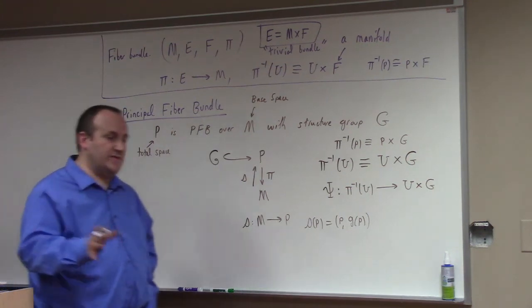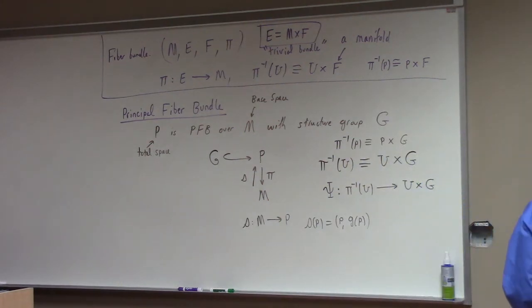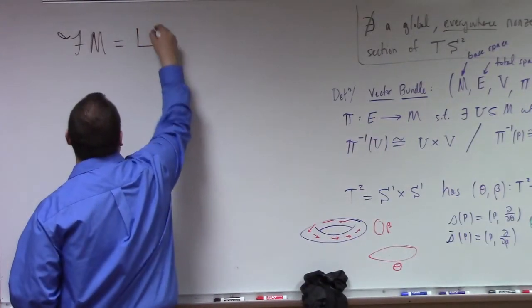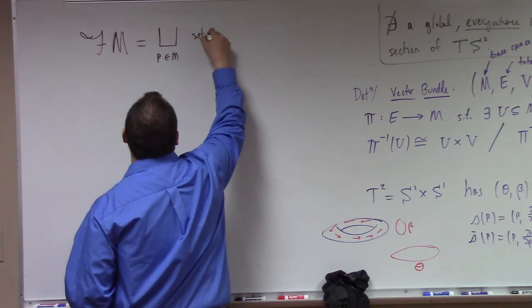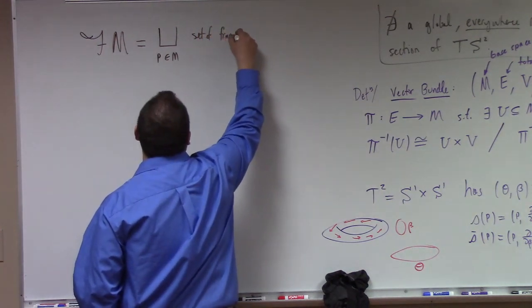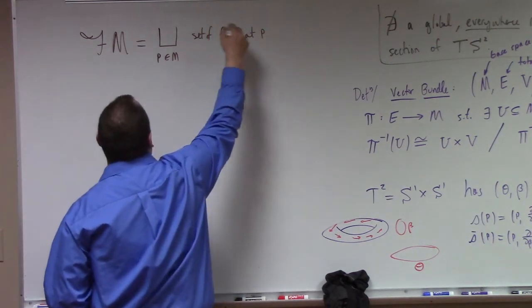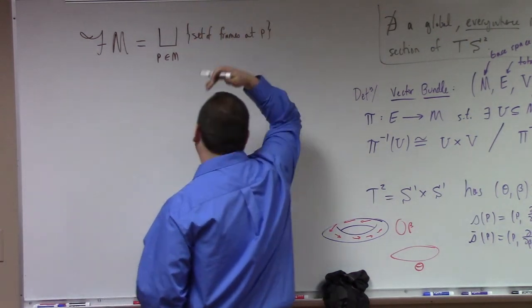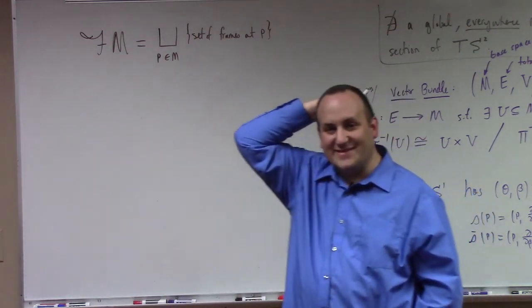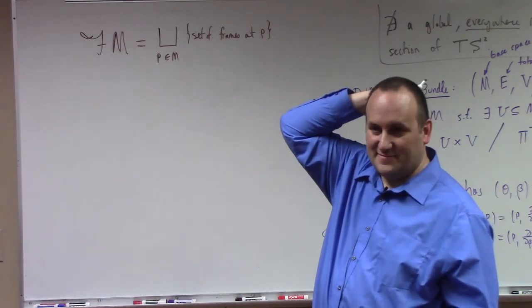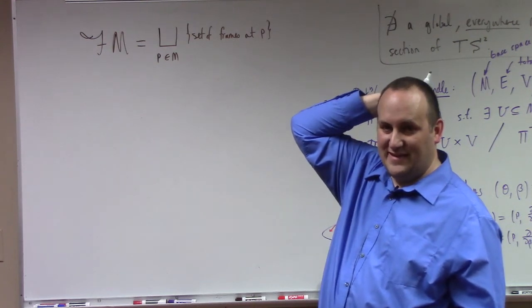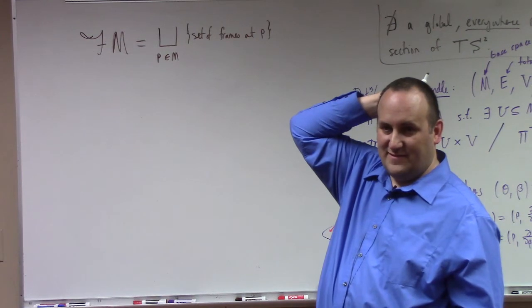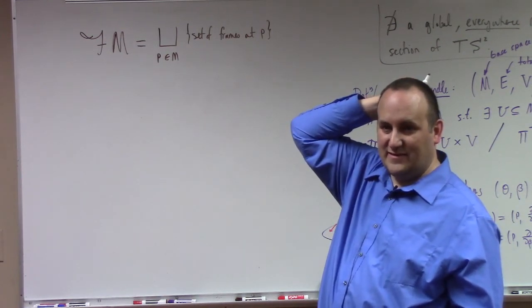I can tell you some more things though, one of the principal fiber bundles which is interesting is the so-called frame bundle of a manifold. So what this is is the disjoint union over P in M of frames at P. What are frames? That's this particular language for basis to the tangent space. So this is the set of all basis for the tangent space attached to each point.